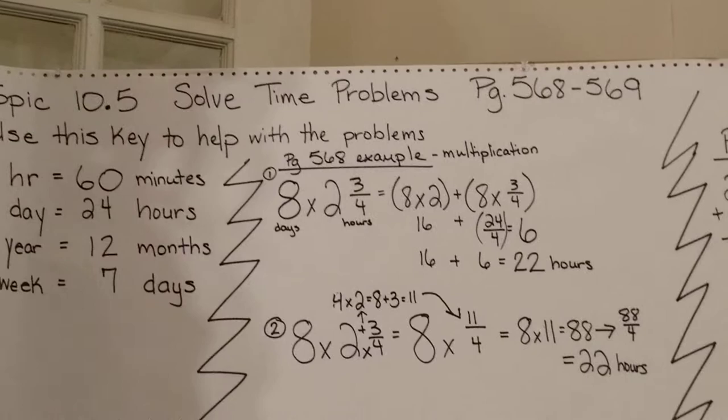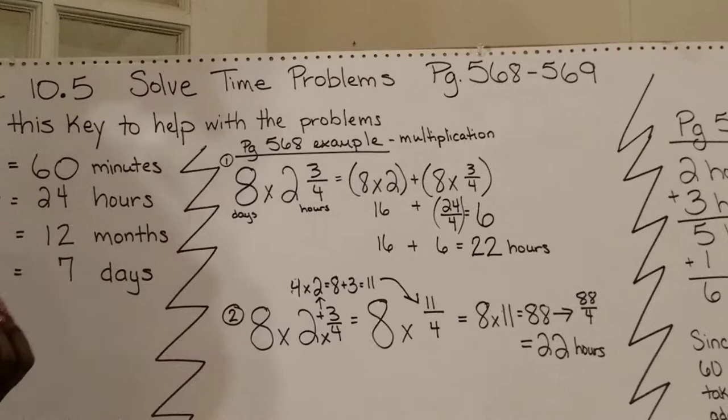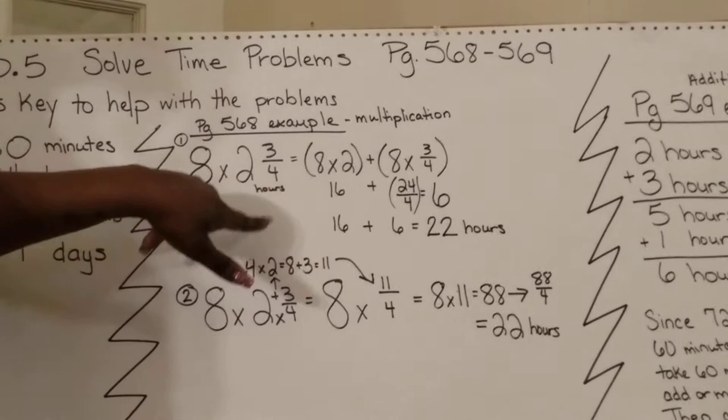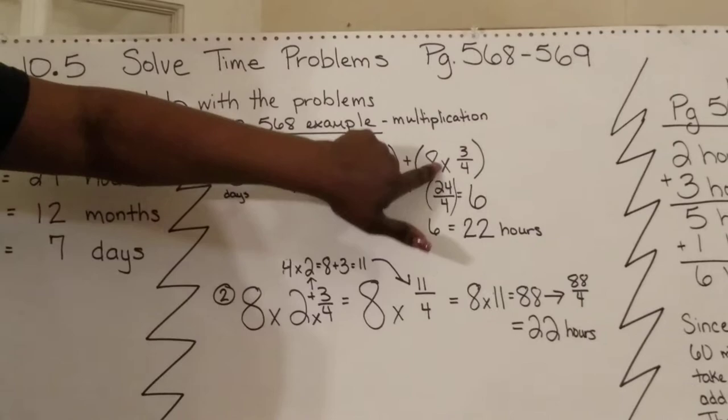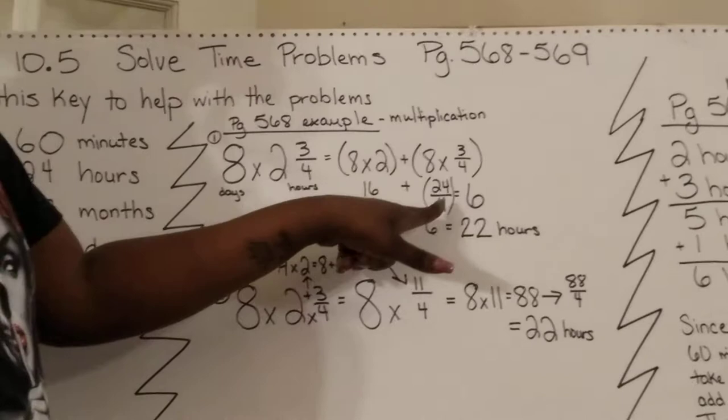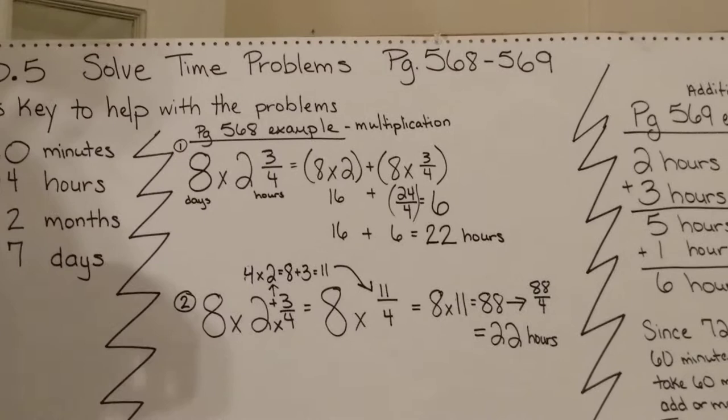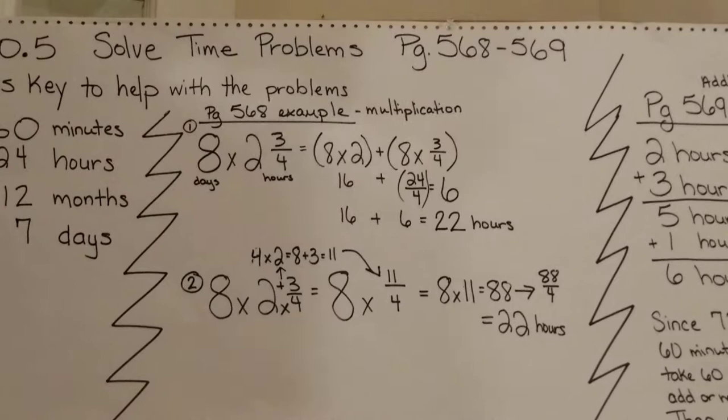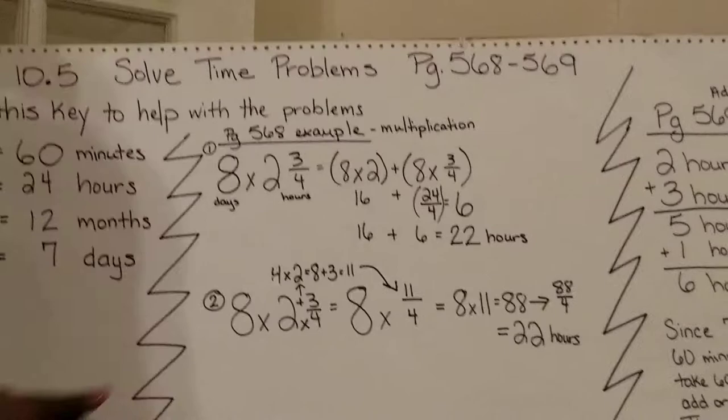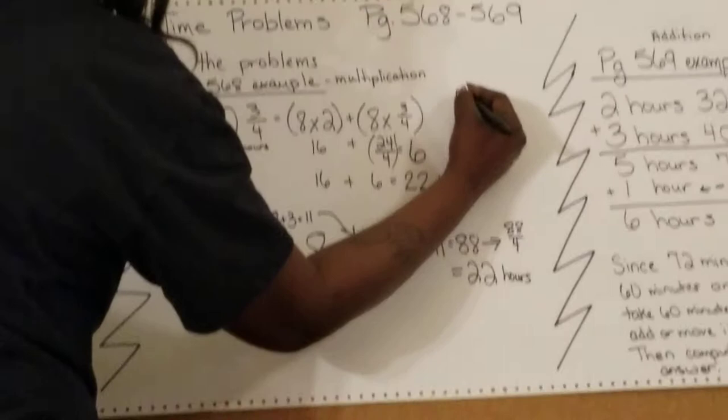On topic 10.4, you may remember me showing you how to multiply a whole number times a mixed number. There were two methods you could use. The method that I chose here, I separated everything, break apart. I had 8 times 2, which is 16, and 8 times 3/4. You multiply your whole number times your numerator and put it over your denominator. 8 times 3 is 24 over 4. So I have 16 plus 24 over 4.